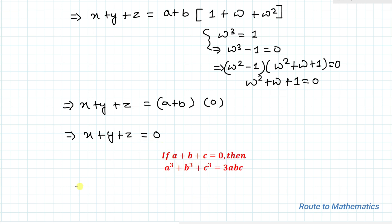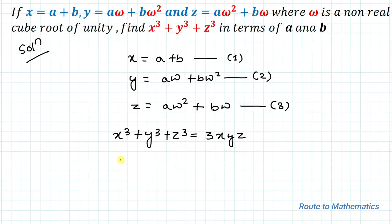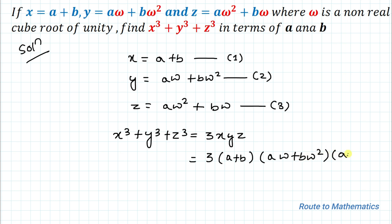Since x plus y plus z equals 0, by applying this condition we have x cubed plus y cubed plus z cubed equals 3xyz. In the next step we will substitute the values of x, y, and z from the given equations. So we have 3 multiplied with x equals a plus b (equation 1), y equals a·omega plus b·omega squared (equation 2), and z equals a·omega squared plus b·omega (equation 3).